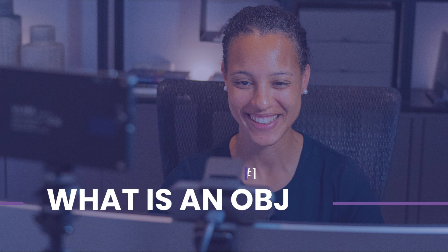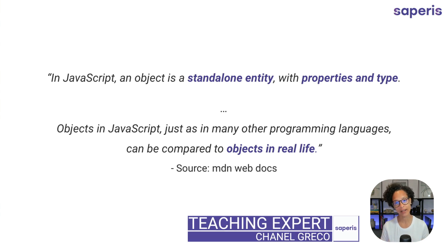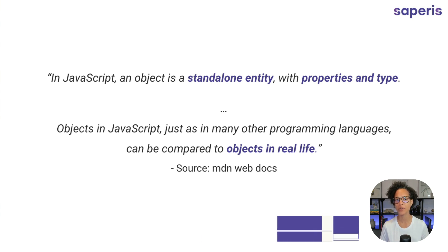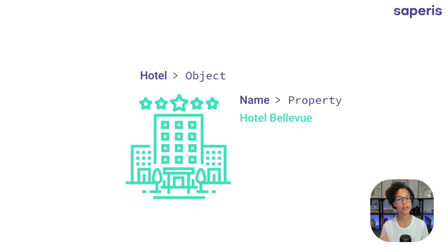What is an object? In JavaScript, an object is a standalone entity which has properties and values. Now these JavaScript objects are comparable to objects in real life. For example, think about a hotel. If we would translate this to JavaScript, the hotel would be our object. And for instance, the name of the hotel would be the property which would contain the value of, let's say, Hotel Bellevue if that were its name.